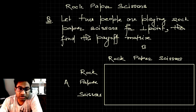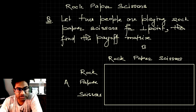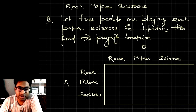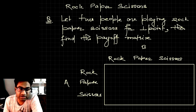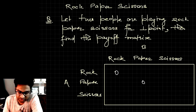In each round, whoever wins will get one point; if he loses he will get minus one point. If the result is a tie, then player A gets zero points. If both players are showing the same thing — that is rock, paper, or scissors — then we know it will result in a tie, so they both get zero points.